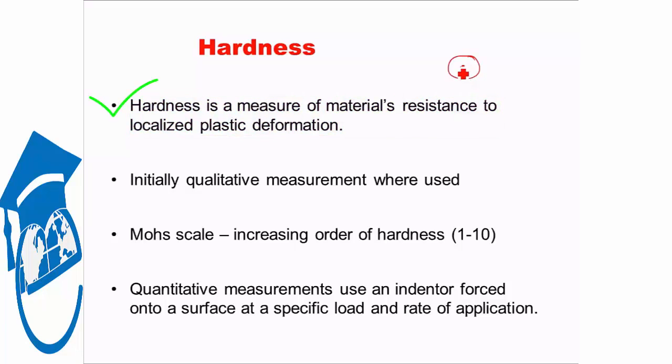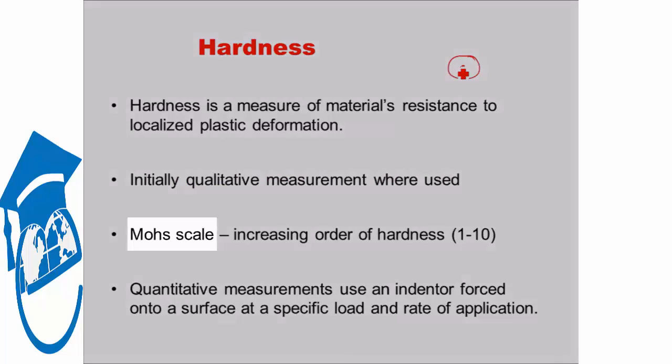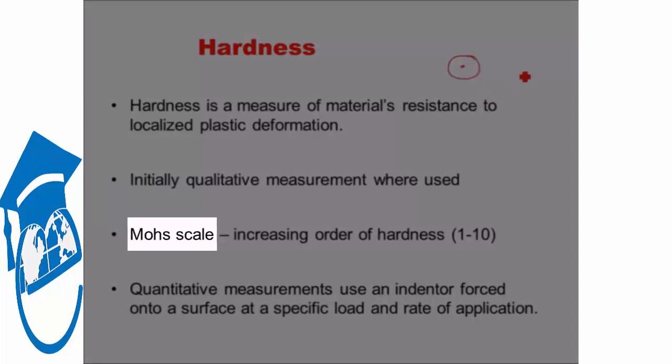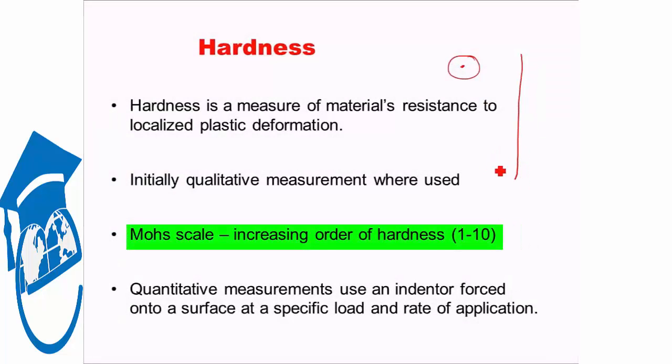We understand what hardness is, but how do we measure it? Initially, in the past, hardness used to be measured qualitatively. That means we had something known as Mohs scale. Mohs scale had different materials, beginning from very soft material marked at 1, like talc powder, at unit distances 2, 3, up till 10, we had different materials with increasing hardness. 10 was diamond.